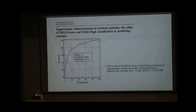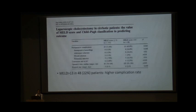Specifically regarding MELD and cholecystectomy, an elegant 2010 study of around 220 cirrhotic patients — all Child A and B with MELD scores ranging from 8 to 27 — found morbidity of around 20% with no mortality, conversion rates of around 5%, and hospital stay of around 4 days. A MELD score greater than 13 had significant predictive value for complications with an AUC of 0.86, leading most authors to use MELD of 13 as a cutoff for selecting patients for cholecystectomy.